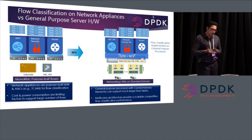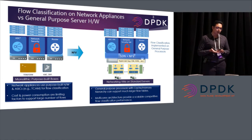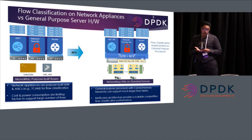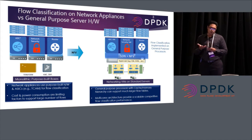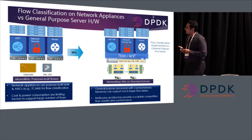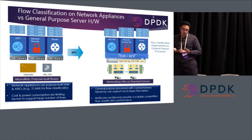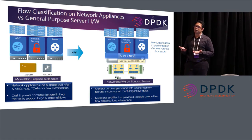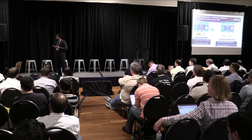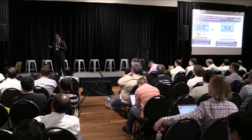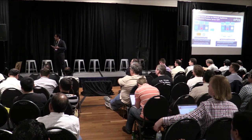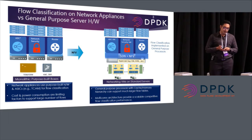Usually, flow classification has been done on TCAMs for the purpose of having higher throughput. TCAMs are great, but they are costly and they are power-hungry. So with NFV, what if we push this flow classification on top of general purpose hardware? Can we use the cache hierarchy to have more flows and do the classification? Can we use the multi-core architecture to scale the performance so multiple cores can work on the classification and have linear scalability?